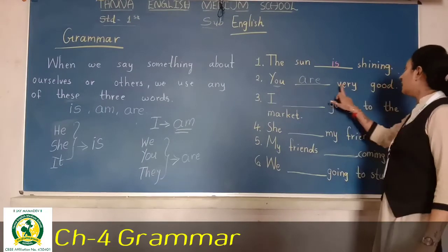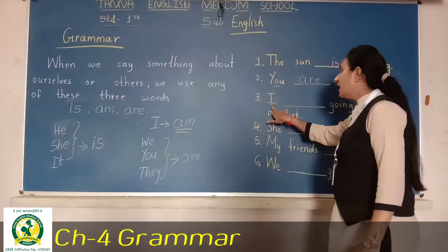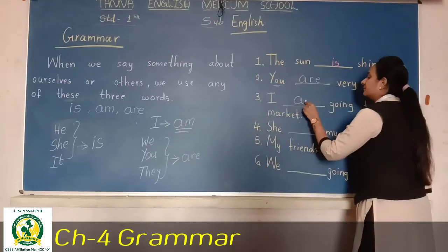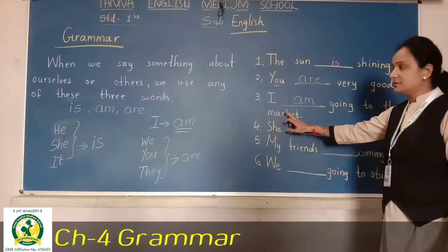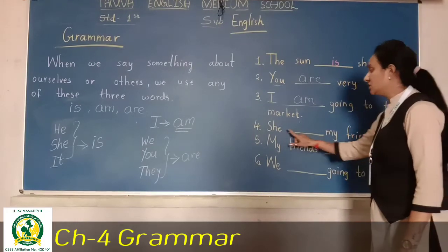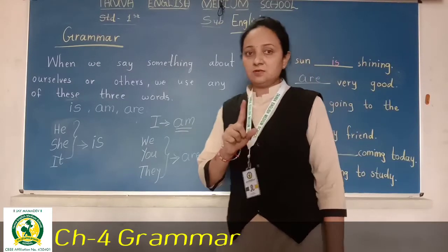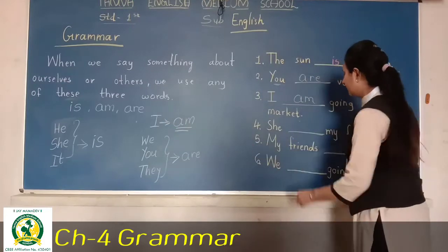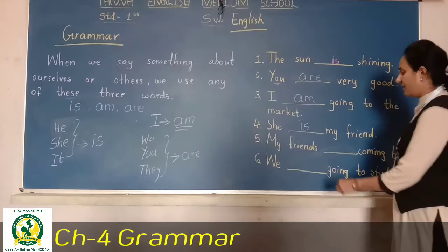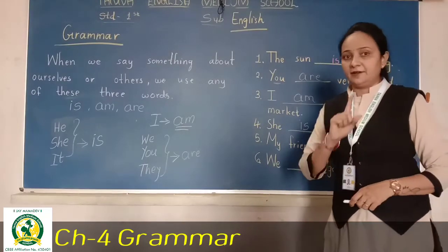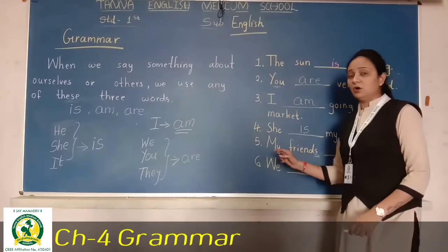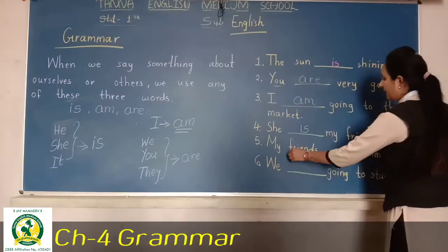Third: 'I dash going to the market' — so 'I' ke saath we do always 'am', so 'I am going to the market'. Fourth: 'she dash my friend' — she ke saath ek hi girl ki baat ho rahi hai, so 'she is my friend'. Fifth: 'my friends dash coming today' — friends mein 's' lagi hai, bahut saare friends hain, so we use 'are' — 'my friends are coming today'.